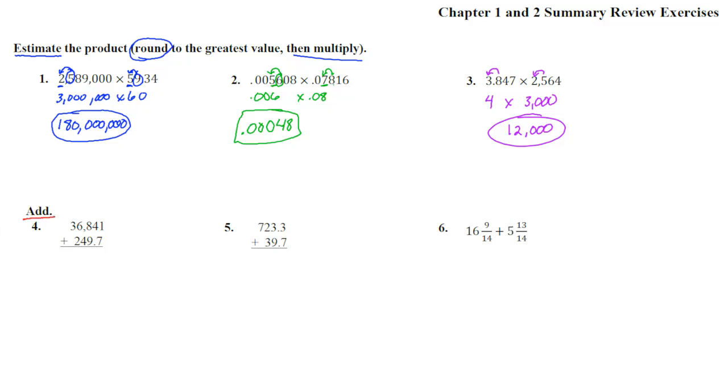Here we go. Number 4, the instructions change - it says to add now. So let's line up the decimal out here. 36.841 plus 249.7. Now the decimals are lined up. 0 plus 7 is 7. 1 plus 9 is 10, carry the 1. 1 plus 4 plus 4 is 9. 8 plus 2 is 10, put the 0 down, carry the 1. 1 plus 6 is 7, and 3. So 37,000 - oh, the decimal comes straight down - 37,090.7. Great.